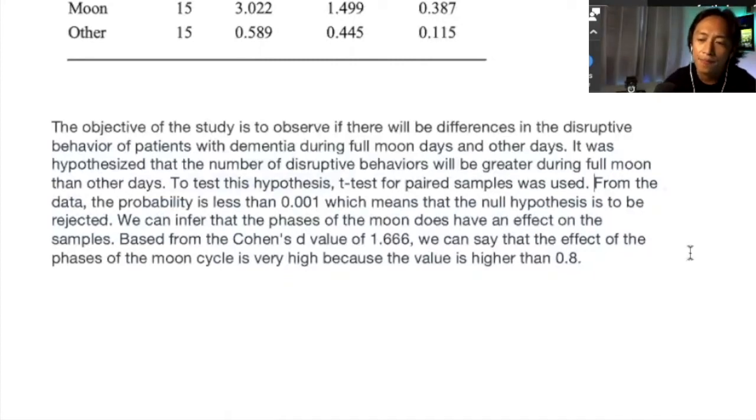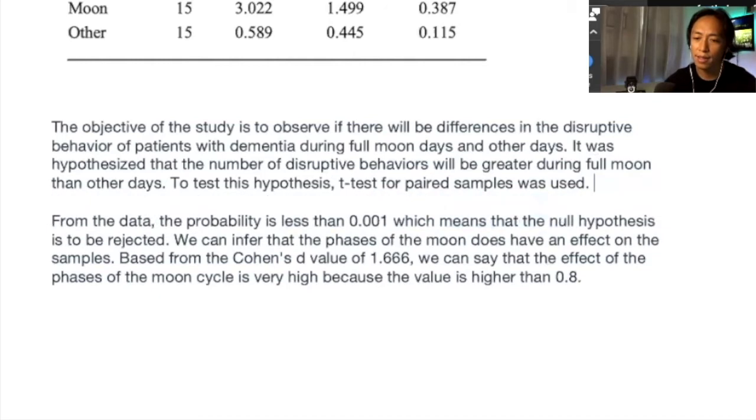Next. So I said, what is the result? From the data, do not make additional commentaries on your own write-up. From the data, the probability is less than 0.01. Now, because we already stated the alternative hypothesis, when you're discussing the result, as much as possible, try to veer away from sort of interpreting your result in reference to the null hypothesis. Because that's not the hypothesis that we stated in the first place. So if I were to write this, I'll just say it straight.